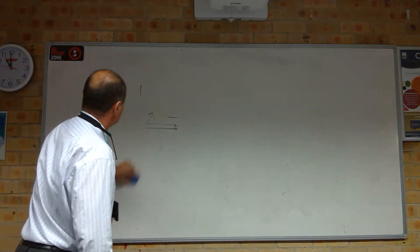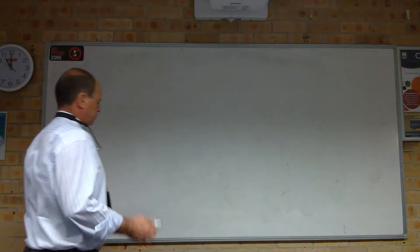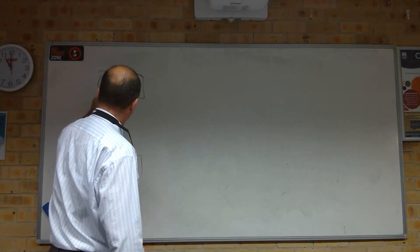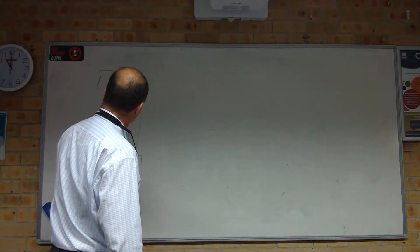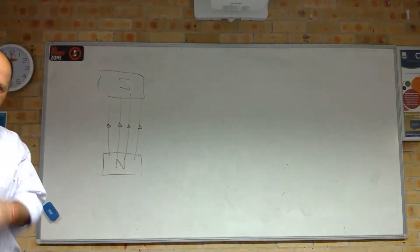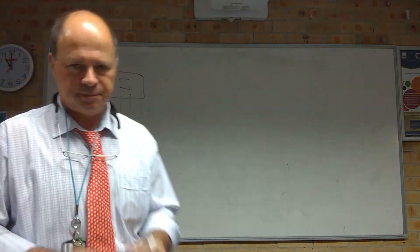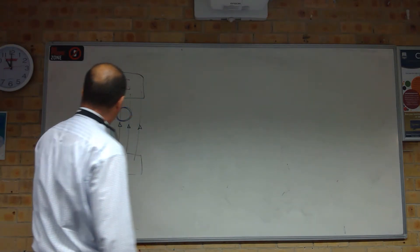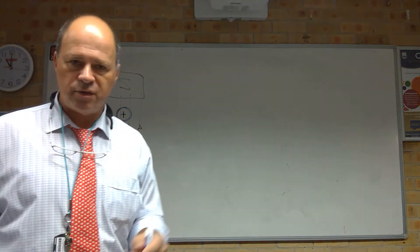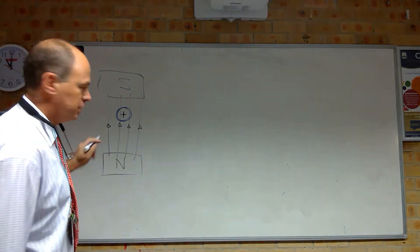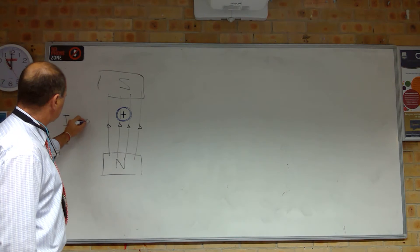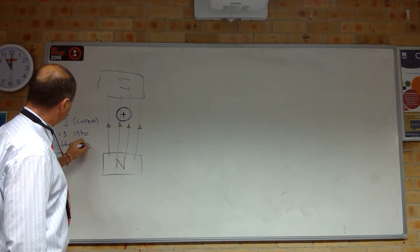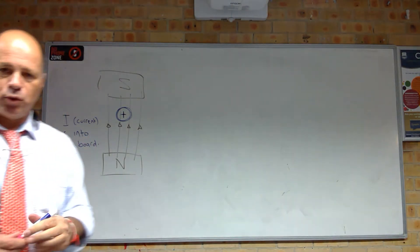Let's do another one. This time I'm going to go north–south with our flux line direction up the page. In this instance I'm going to show you the end of the wire and put a plus on it. What does that mean? The plus is at this end of the conductor going into the board — that means current is going into the board. Pause the video and tell me which direction the force is acting.